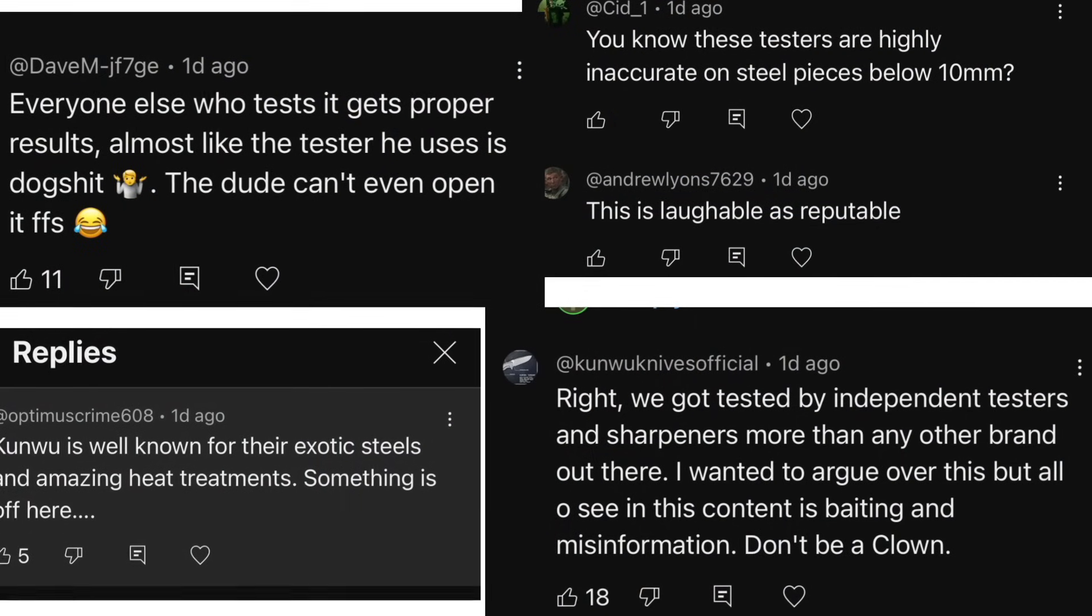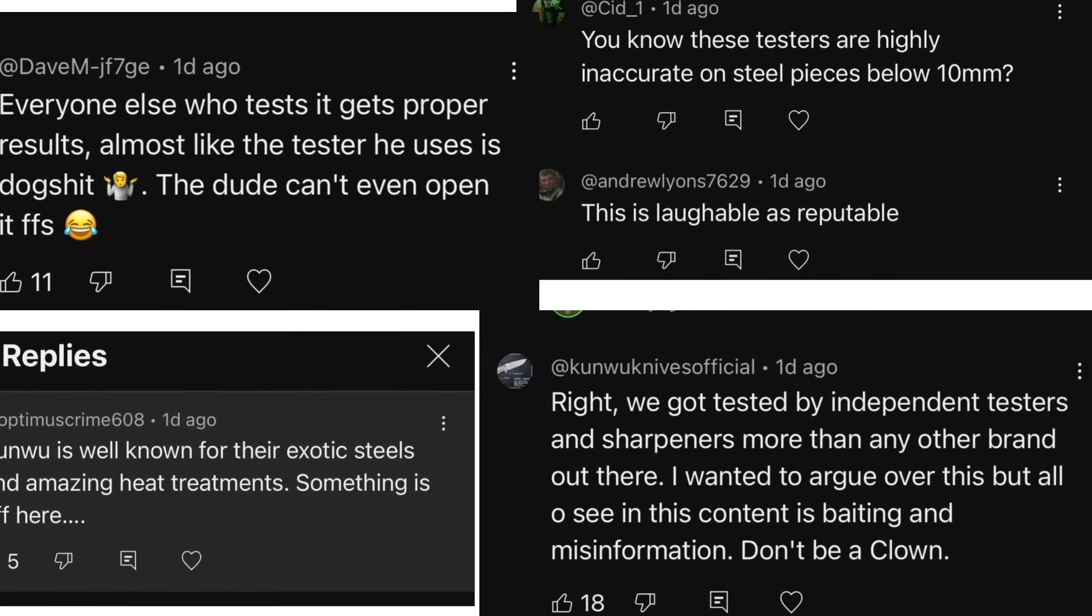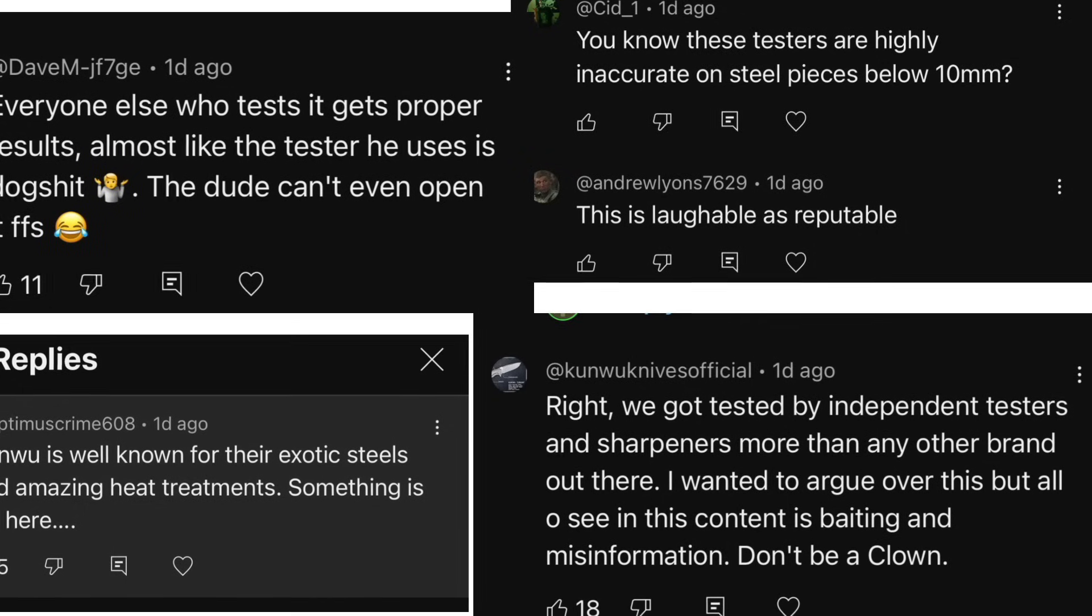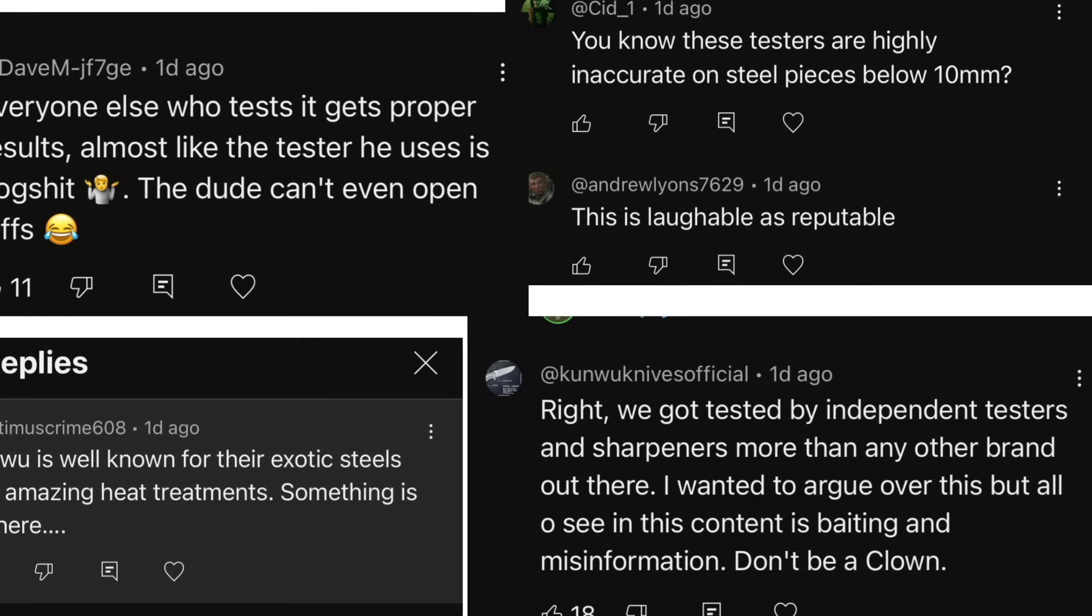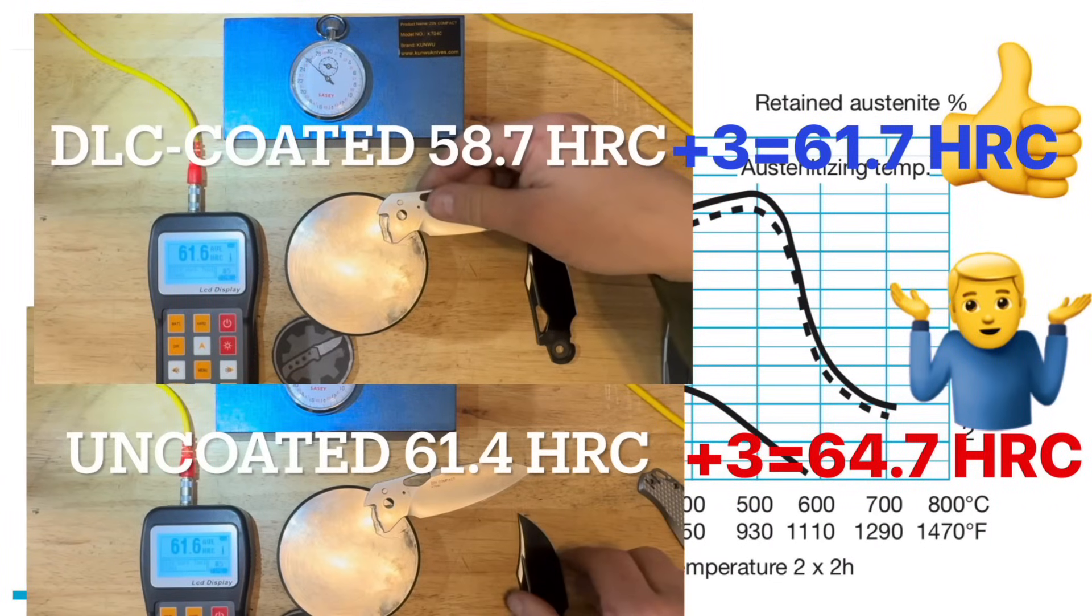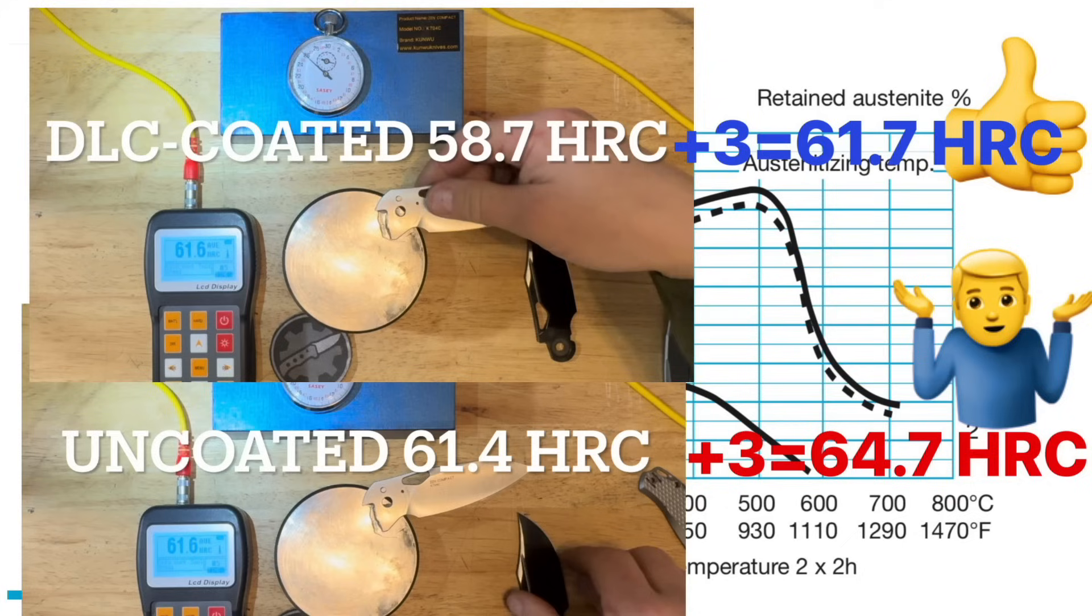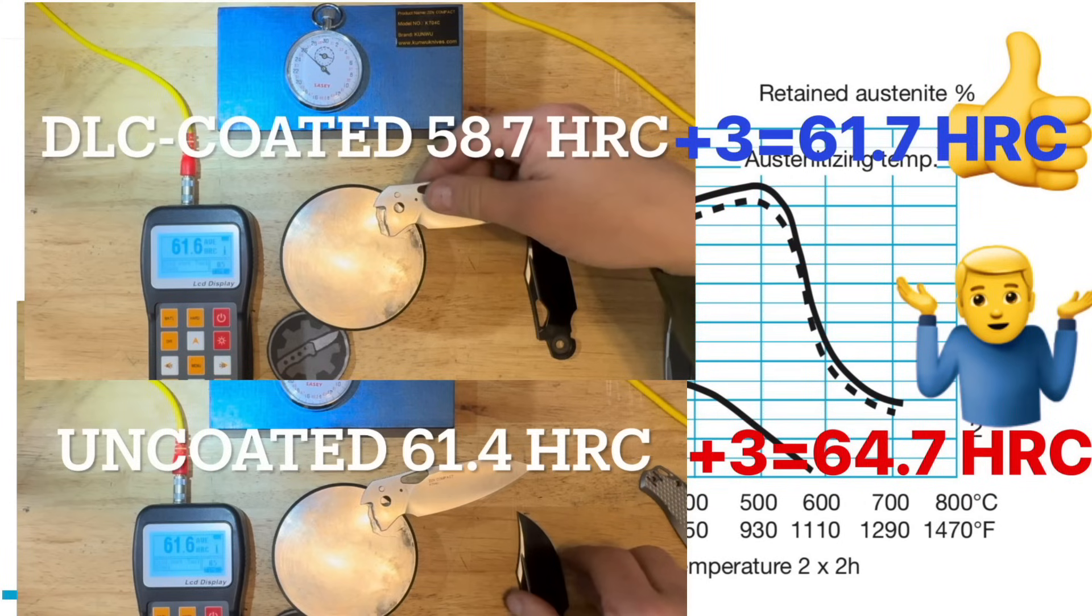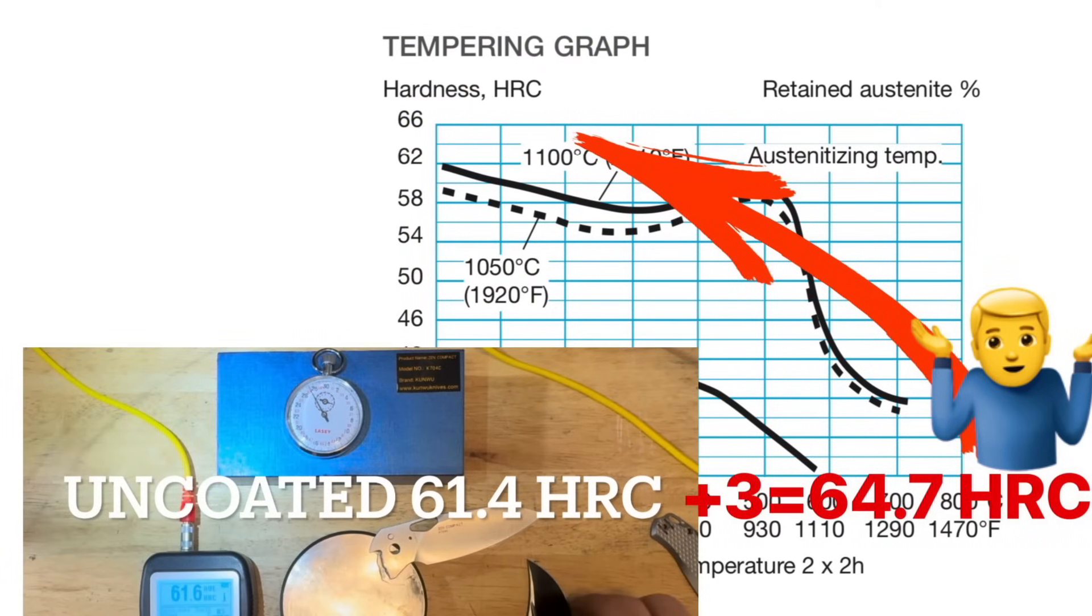There are other comments under the original video insinuating that this is a very inaccurate method. And the reason they say that is because it's not industry accepted standard. And they're correct. It is not an official method and should not be used in official evaluations. What they are is unhappy with my results because they thought their blades are a lot harder. Let's suppose they're right and my device is indeed reading three points under. Let's add these three points to the coated blade results. We're going to get 61.7 HRC. Great. Except for one little thing. We now have to add those same three points to the uncoated blade result, which will take us to 64.7 HRC. And how great would that be? Except one little detail.